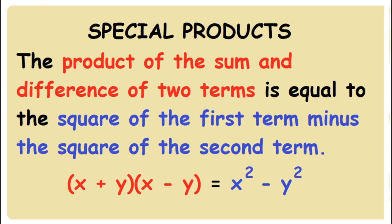The product of the sum and difference of two terms is equal to the square of the first term minus the square of the second term.